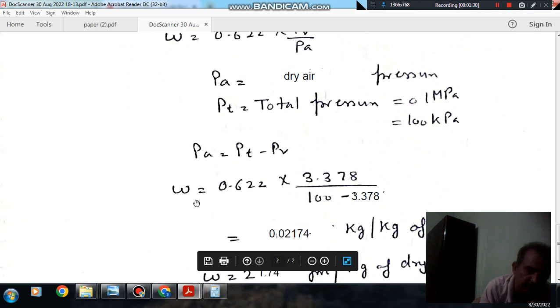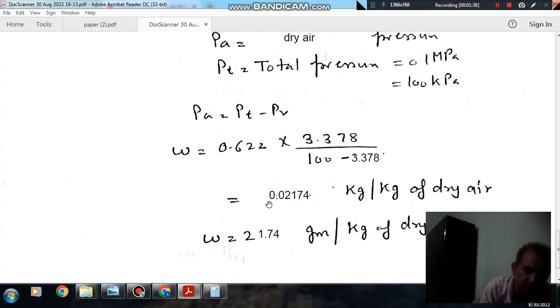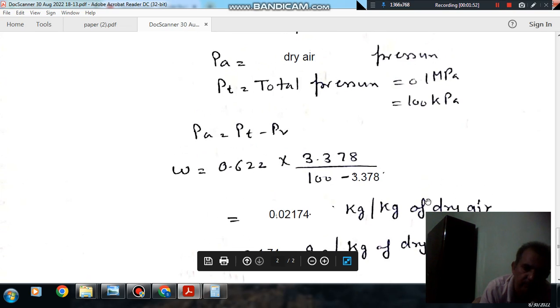The specific humidity comes out to be, putting the values of PV, PT, and PA, we get 0.02174 kg per kg of dry air, or 21.74 grams per kg of dry air. Thank you.